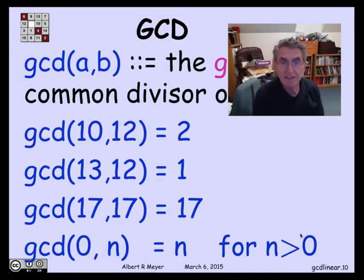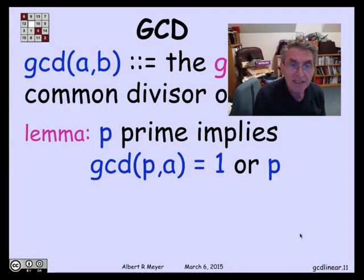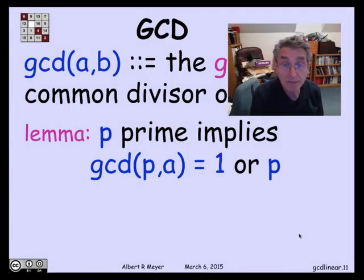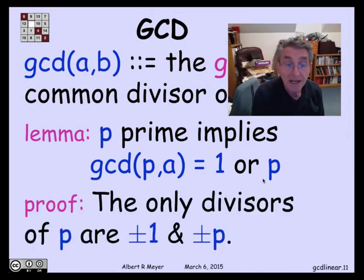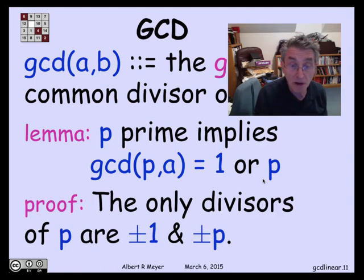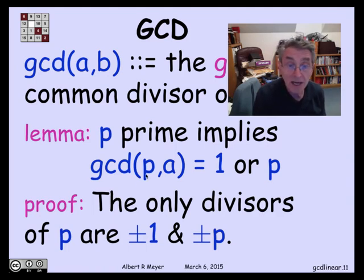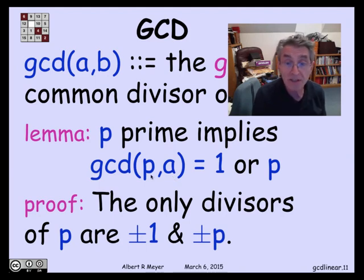One final fact to set things up for the next segment: the GCD of a prime p and a number a is either 1 or p. The reason is that the only divisors of a prime are plus or minus 1 and plus or minus p. So if p divides a, the GCD is p; otherwise, the GCD is 1.